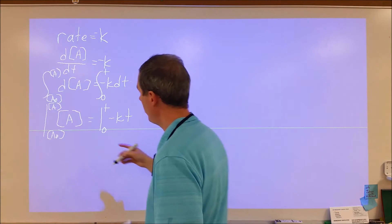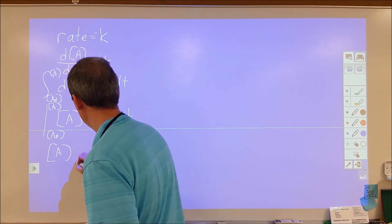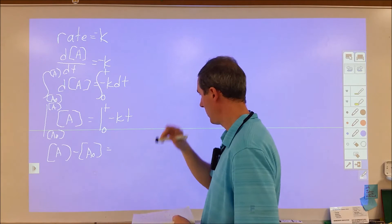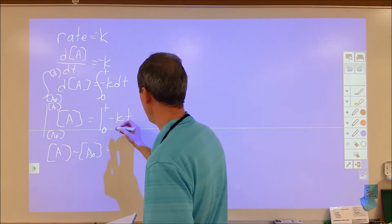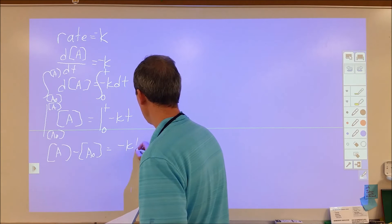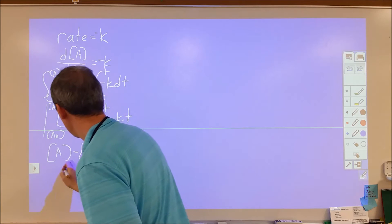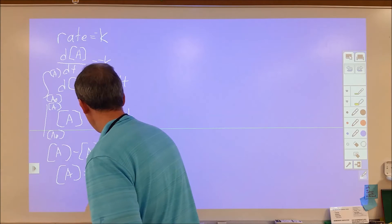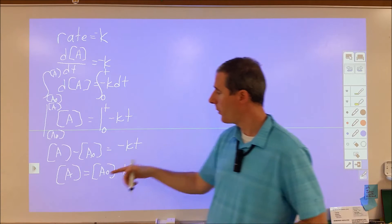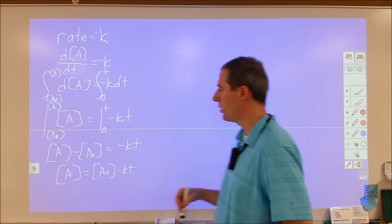As we do that evaluation, A from A₀ to A gives us A minus A₀. And then here we have negative Kt, where we get zero for our initial point and t for our final. So we end up with negative Kt. Pulling A₀ over to the other side, we get A equals A₀ minus Kt. For a zero-order reaction, if we know the initial concentration, the rate constant, and the time, we can calculate the final concentration.